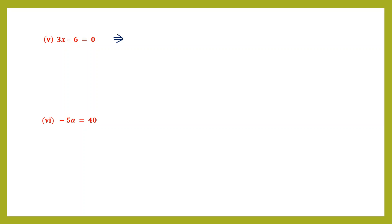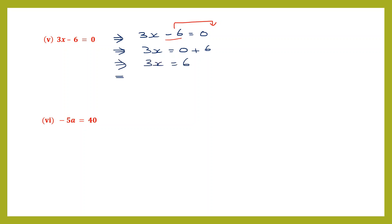From here onwards I'll use the transposition method. Question 5: 3x − 6 = 0. Transpose −6 to the right-hand side; it becomes +6. So 3x = 0 + 6 = 6. Now transpose 3 — which is multiplication — to the right, where it becomes division: x = 6 ÷ 3 = 2. X is equal to 2.